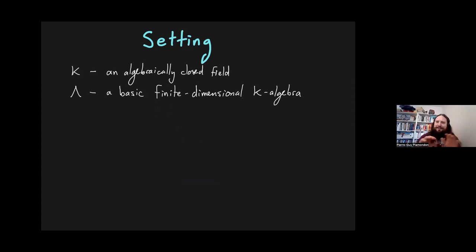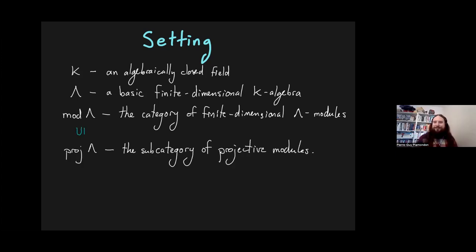What is my setting today? K is an algebraically closed field, and Λ is a basic, finite-dimensional K-algebra. I don't think K needs to be algebraically closed, but since I'll be talking about a lot of results, this seems to be the greatest common divisor for all the results that are in the literature. Now, mod Λ is the category of finite-dimensional Λ modules, right modules or left modules, it doesn't matter today. And proj Λ is the full subcategory of finitely generated projective modules, which we will need for the next definition.